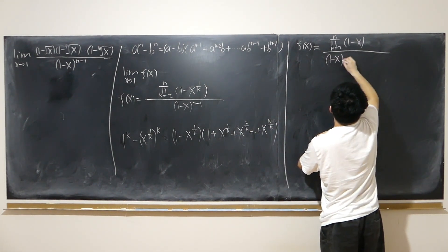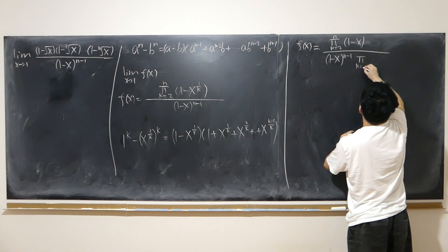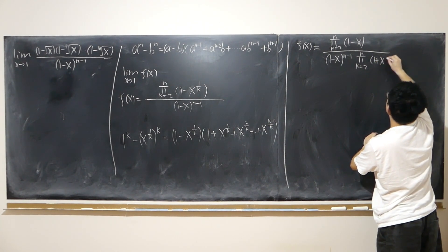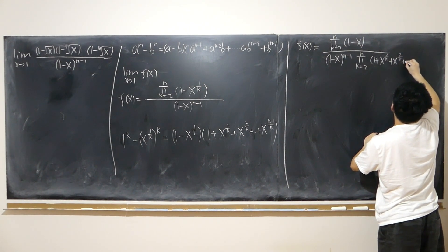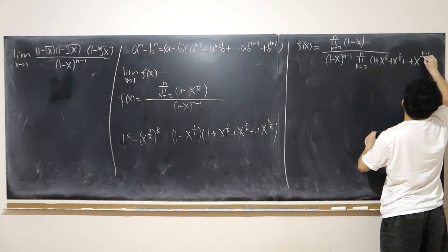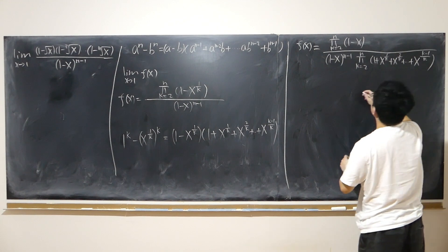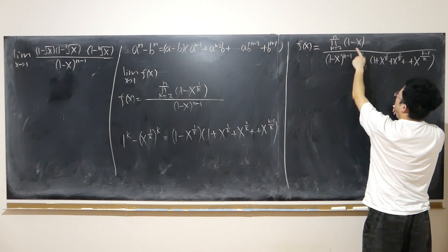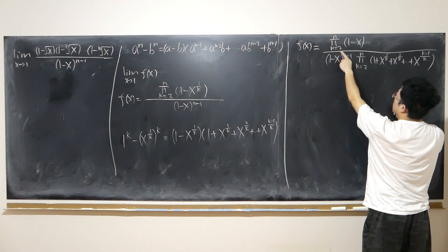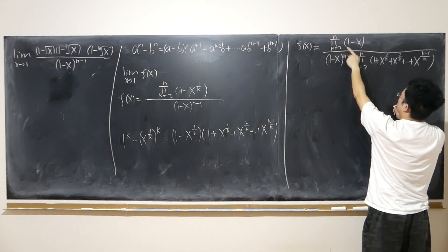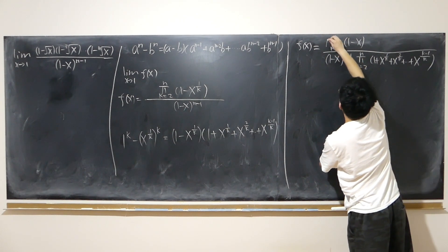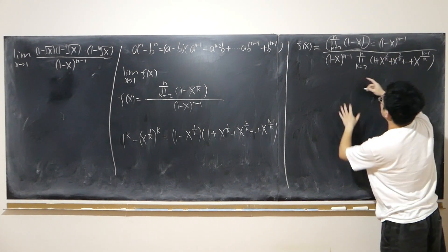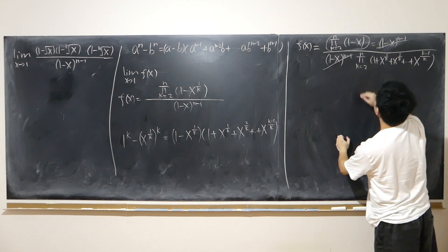So 1 minus x to the power of n minus 1, times the whole finite product from k equals 2 to n of 1 plus x to the 1 over k, plus x to the 2 over k, all the way to x to the k minus 1 over k. The top, even though there's no more k, I still have to multiply n minus 1 many times, and every term is this term, so this term is raised to the power of n minus 1 in the end. So the top turns into 1 minus x to the power of n minus 1, and they cancel out.